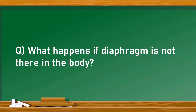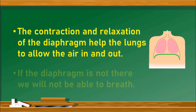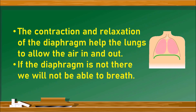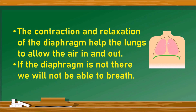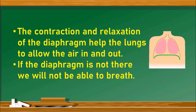The contraction and relaxation of the diaphragm helps the lungs to allow air in and out. Observe the picture and the GIF — the green color line indicates the diaphragm. The contraction and relaxation of the diaphragm makes the lungs take air in and throw it out. If the diaphragm is not there, we will not be able to breathe, because lungs are not muscular structures. Hence, the diaphragm helps the lungs to take in air and throw it out.